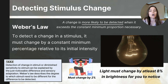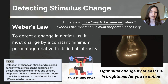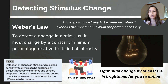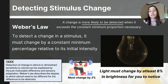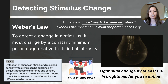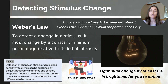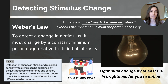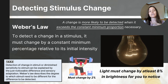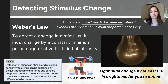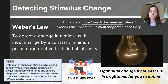Weber's Law is about how we notice change around us. In order to notice that a stimulus has changed — like light getting brighter or dimmer, or a weight getting heavier or lighter — the change has to be big enough compared to what you started with. If a light gets dimmer by a little bit, you might not notice it, but if it gets dimmer by a lot, you will likely notice it.